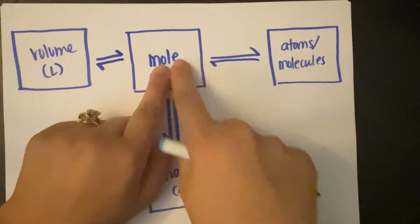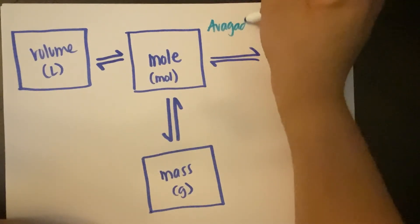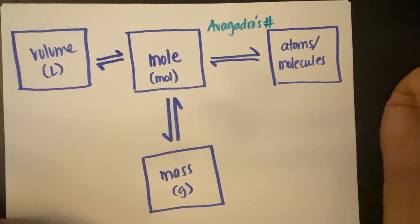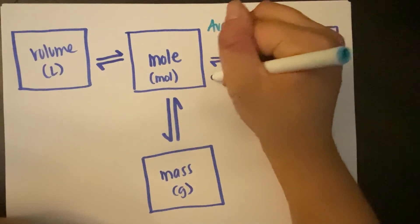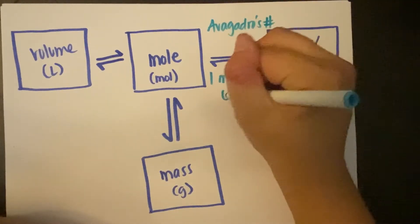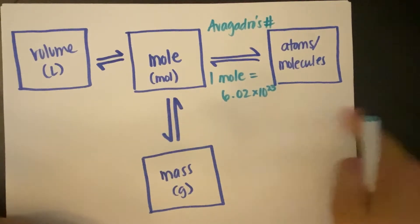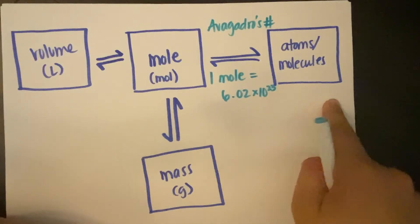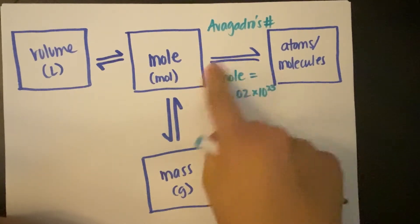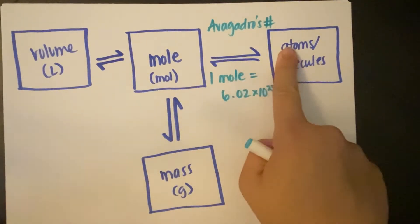In order to convert between mole and atom, you use Avogadro's number. And this is a super wonderful number that you'll end up memorizing, I'm sure. So one mole of anything is 6.02 times 10 to the 23rd, whatever - atoms, molecules, particles, formula units, you name it. So this number is one you definitely want to memorize. And we'll do examples of this in a second.